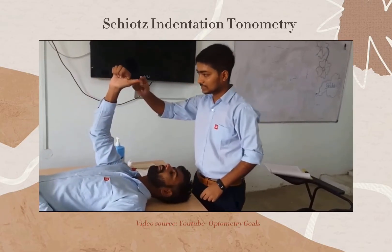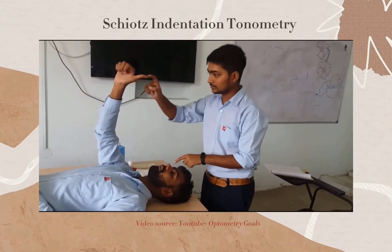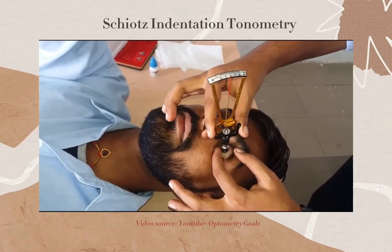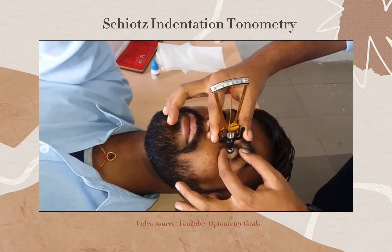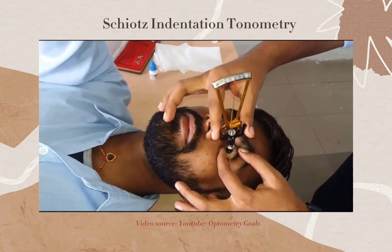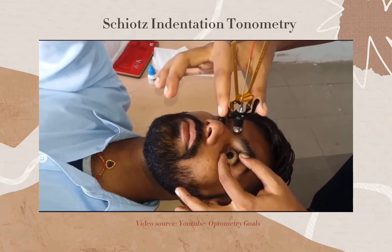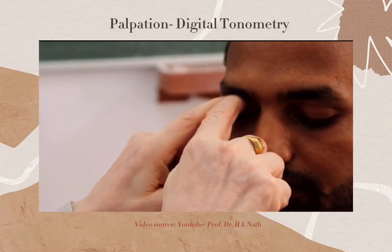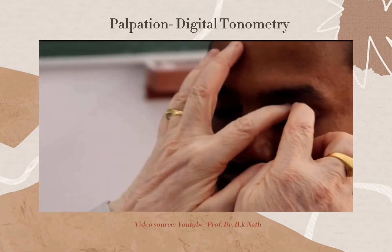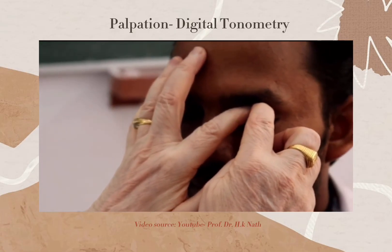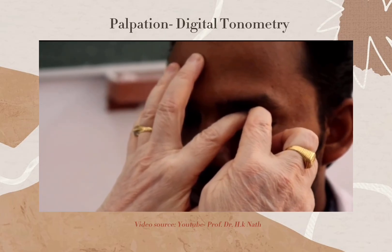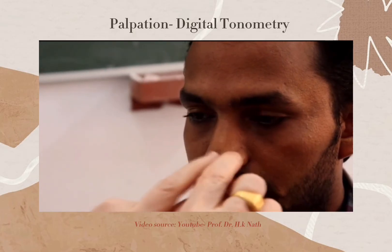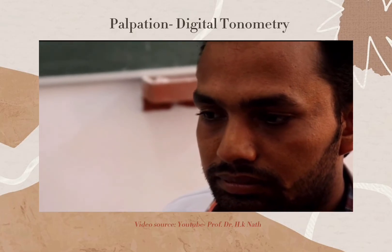On the other hand, the Schiøtz Indentation Tonometer is used to measure intraocular pressure by measuring the depth produced on the surface of the cornea by a load of known weight. The indentation of the corneal surface is inversely proportional to the intraocular pressure. Lastly, we have Digital Tonometry or the Palpation Method. The intraocular pressure is estimated by the response of the eye to pressure applied by a finger — a firm touch indicates normal intraocular pressure, while a hard one indicates high intraocular pressure.